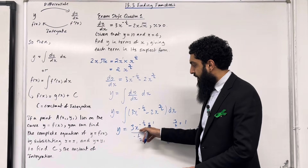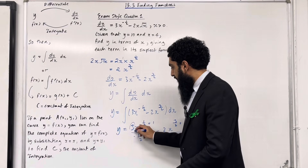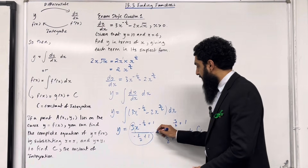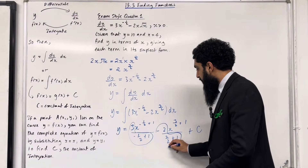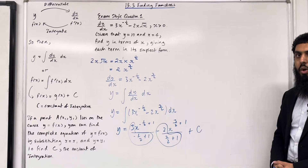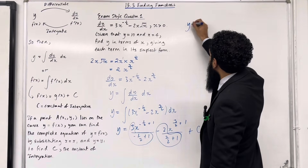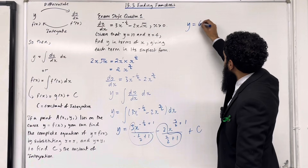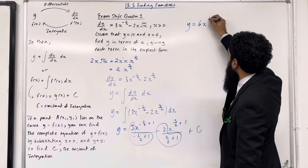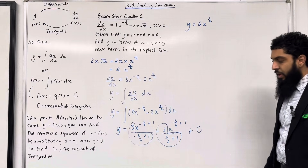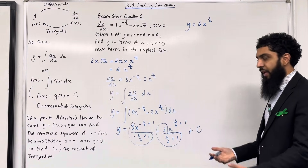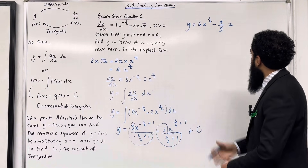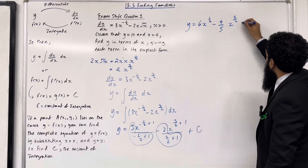The coefficient of the first term: 3 divided by (-1/2 + 1) gives 6, so we get 6x^(1/2). The coefficient of the second term: -2 divided by (3/2 + 1) gives -4/5, so we get -4/5 x^(5/2). Therefore y = 6x^(1/2) minus 4/5 x^(5/2) plus c, the constant of integration.